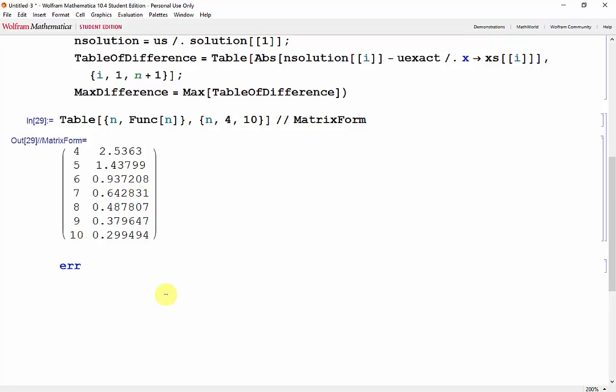Now we get our error, which is a table containing 3/n and the function of n, where n goes from 4, and this time let's make it 15.